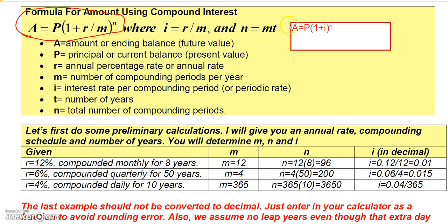Or you can think of it like this: A equals principal times the quantity 1 plus i raised to the n, where again i is r over m.